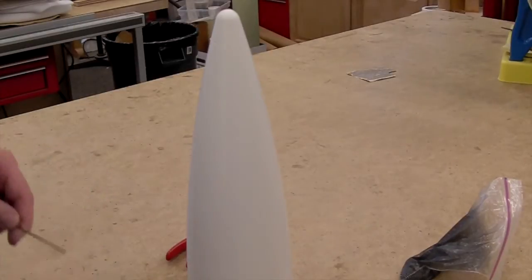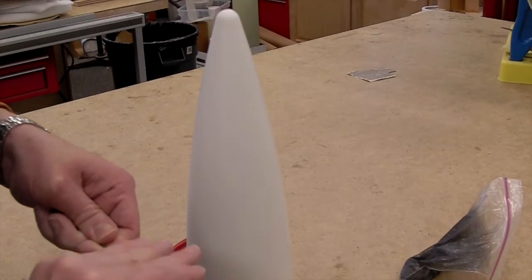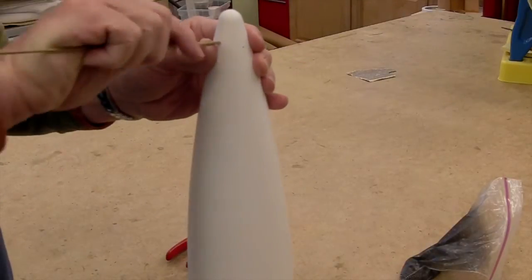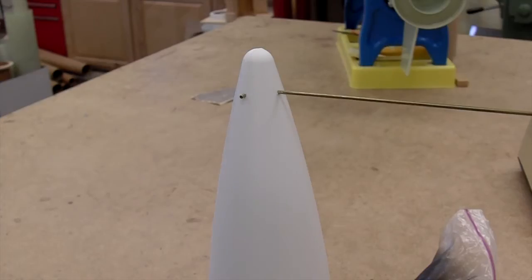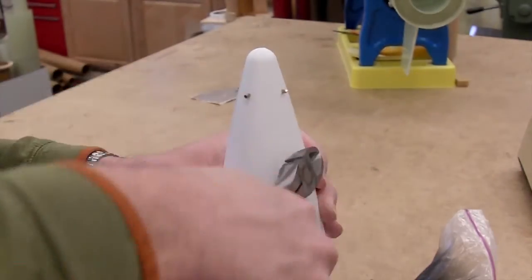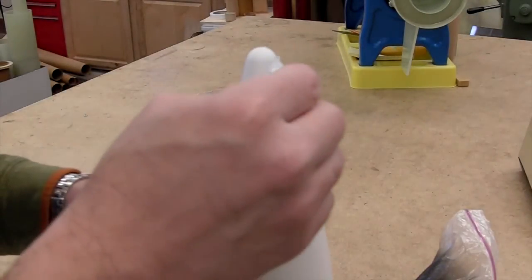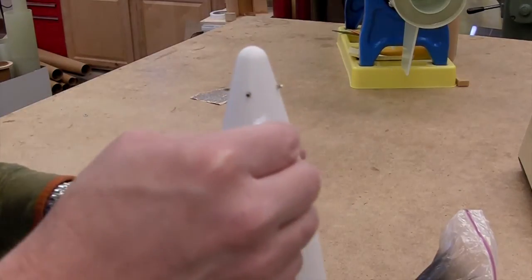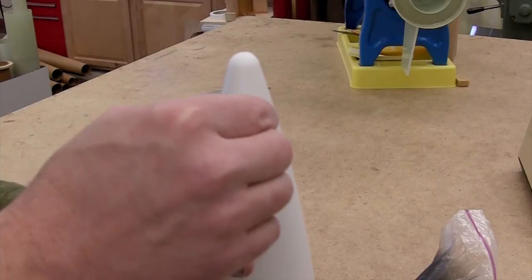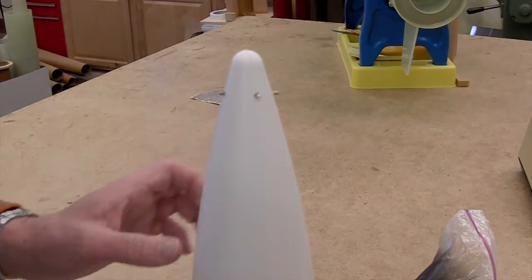Now we can take the rod, scuff up the surface a bit to make sure that the epoxy will bond nicely, and run it through the cone. Run the dowel through both pairs of holes, cut off the excess. Then put a little CA to prevent the rod from moving while we're working on it.